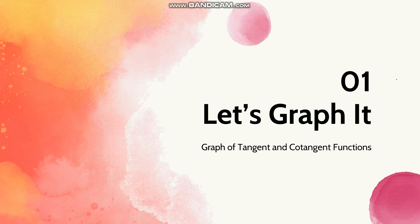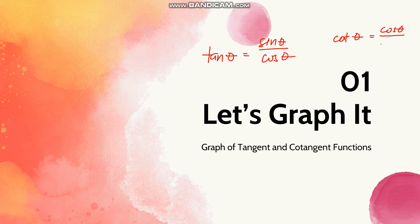Before I show you the graph of the tangent and cotangent functions, let's recall some of the concepts related to tangent. Tangent of theta can be solved if we divide sine of theta by cosine theta. And we can get cotangent theta if we divide cosine theta by sine theta. So for tangent, the denominator is cosine. For cotangent, the denominator is sine.